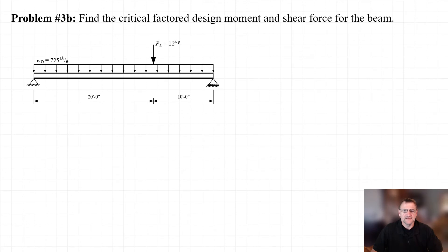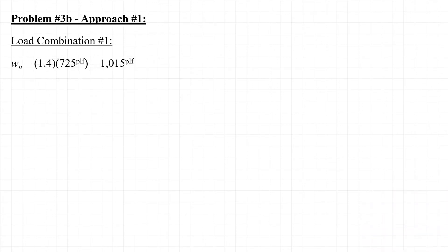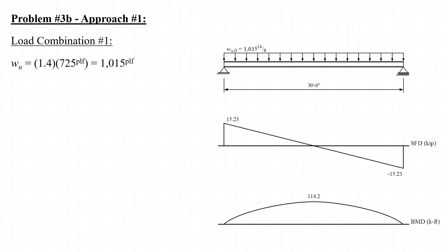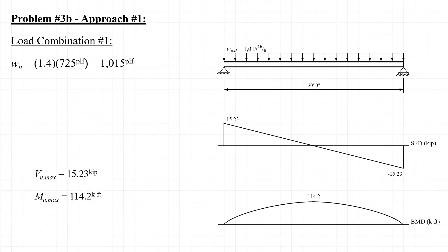Now let's take a look at a slightly different version of the same problem. In this case, instead of having a pair of point loads located at the third points, we'll consider the case where only one point load is applied at the second third point of the beam. Using approach number one and considering load combination number one, the factored load applied to the beam is the same as before — only dead load — so there is no change to the resulting factored shear force or bending moment.